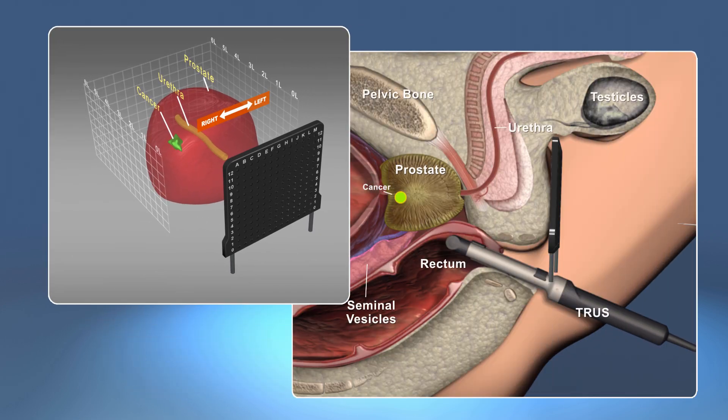The image on the right depicts several landmark structures such as the testis, prostate, pelvic bone, and TRUS — or transrectal ultrasound — which we use to visualize the prostate during the three-dimensional staging biopsy.